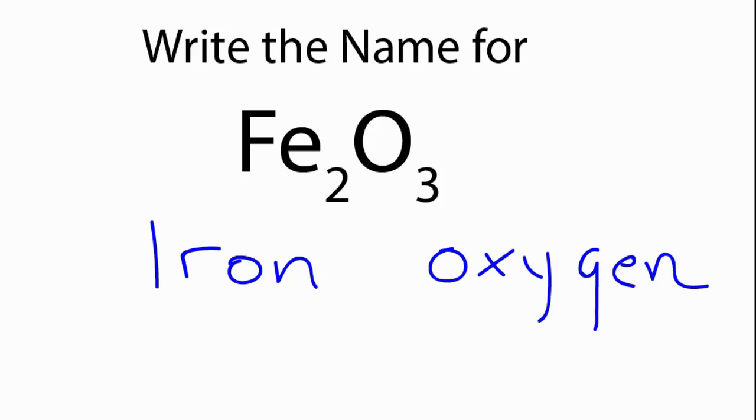We can leave the positive ion, the metal there, iron, just like it's found on the periodic table, but we do need to change the oxygen. So we're going to cross out the ygen and replace that with ide.